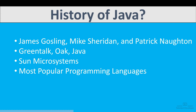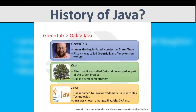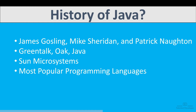Their main intention was to make an interactive television, but they quickly developed something else. The small team of Sun Engineers was called the Green Team, and the language was called Green Talk at that time. The file extension was .gt, meaning Green Talk. After that it was called Oak, and again in 1995, Oak was renamed Java.